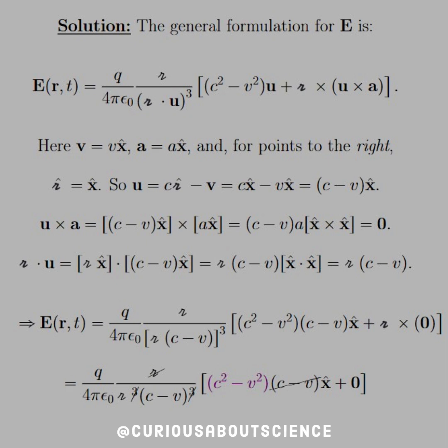And then we have script R cross zero. Well, the cross product with the zero vector is zero, so that's easy. And then we see that if we cube everything in that denominator, we get a cancellation of R in the numerator with the factor of R³, script R³. And then that C minus V cancels with the factor of C minus V in the denominator.